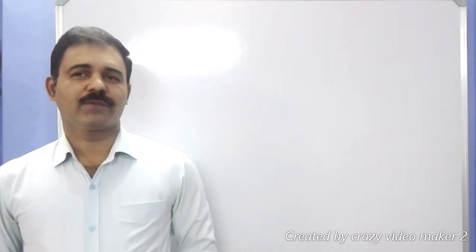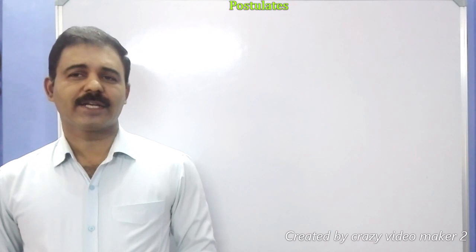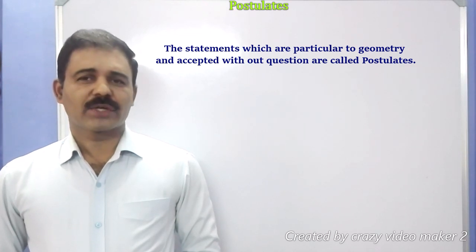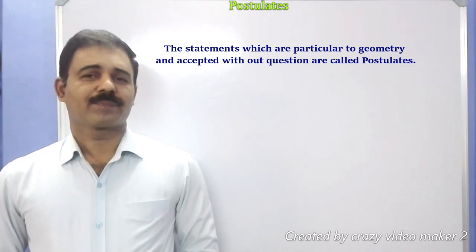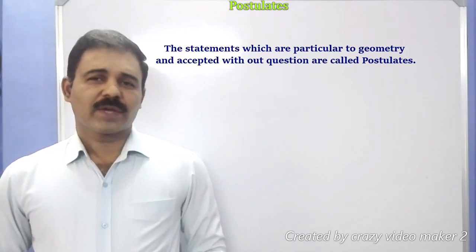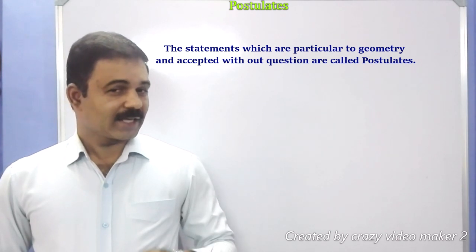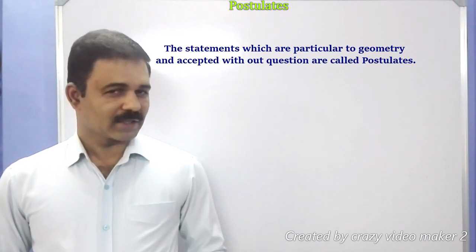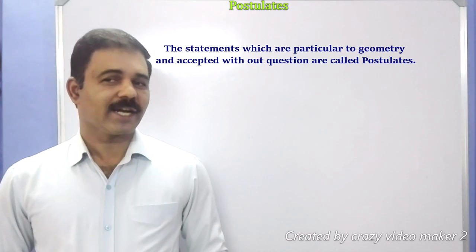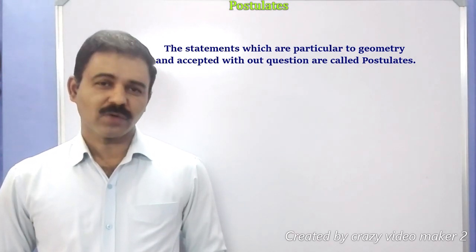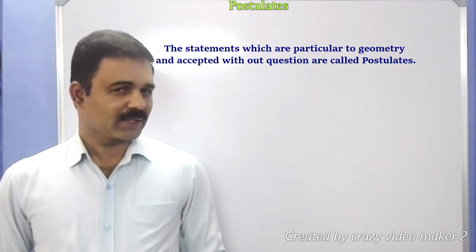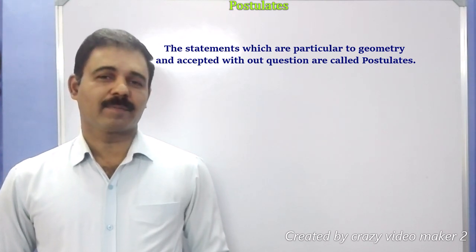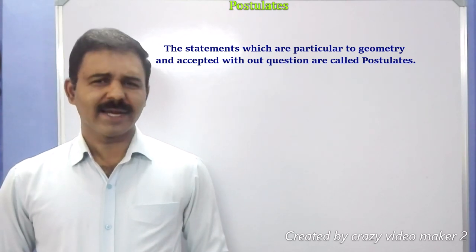Dear student, in the previous class we discussed about axioms. In this class, let us discuss about Euclid's postulates. Postulates are statements which are particular to geometry and accepted without question. Axioms are general statements accepted without question and applicable to all branches of science, but postulates are particular to geometry only.